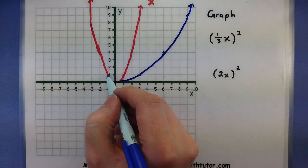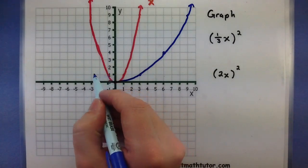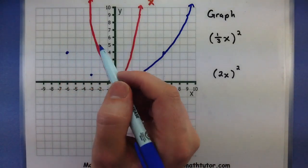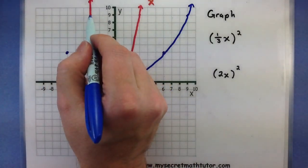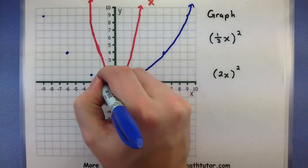We can do the same things with the x values on the other side. So here's an x value at negative 1, now it's at negative 3. X value at negative 2, now it's at negative 6. X value at negative 3, now it's at negative 9, and there's the other half of our parabola.